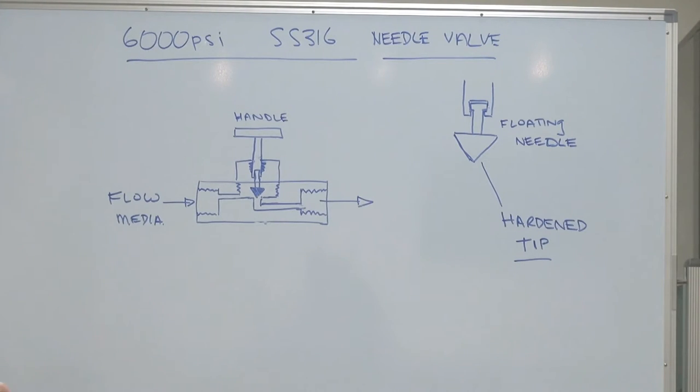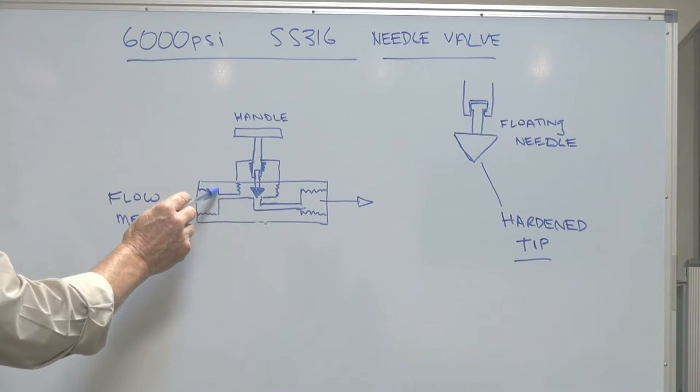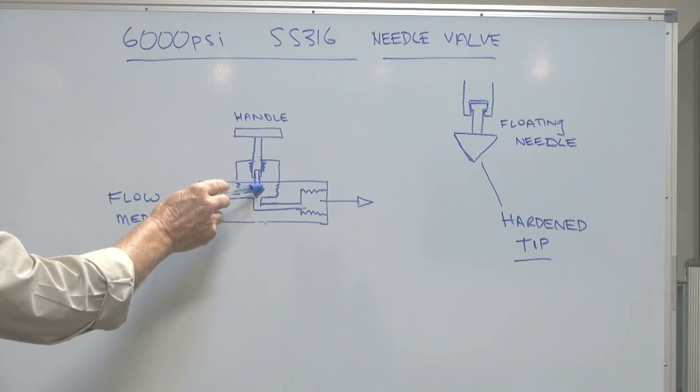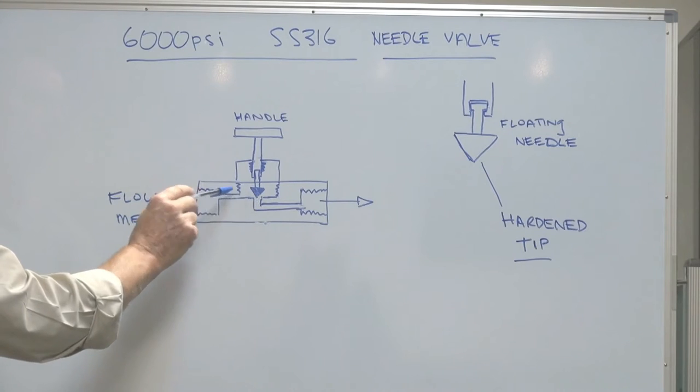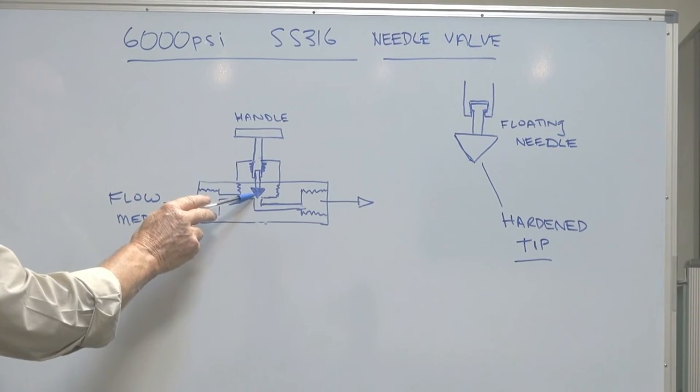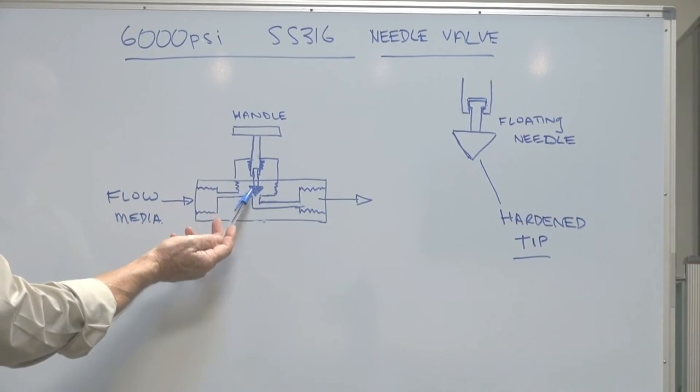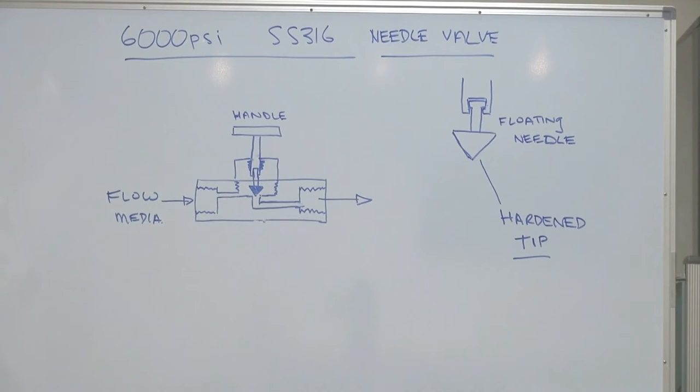Because you've got very high pressure, the actual loading is on top, going down and holding it down. At 6,000 PSI, you're going to have a lot of pressure coming back up, so it has to be on the top, which is holding it down.